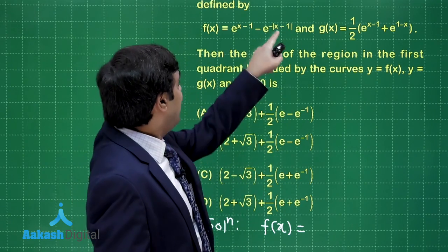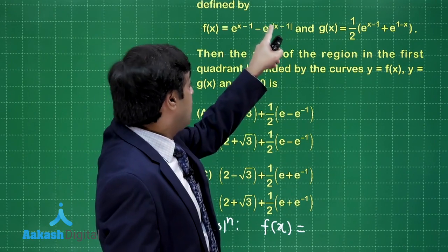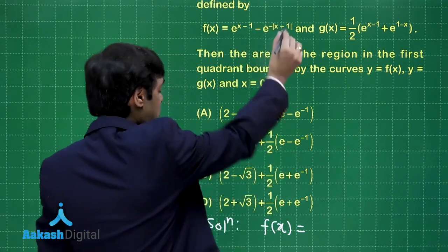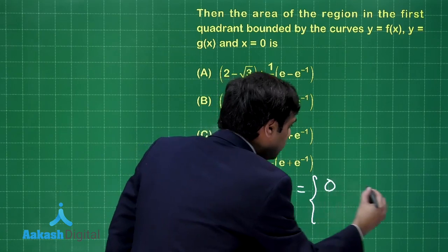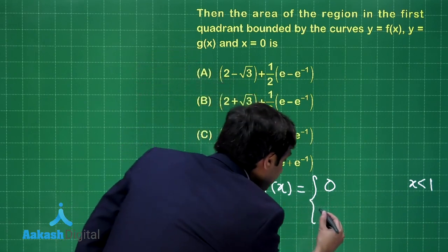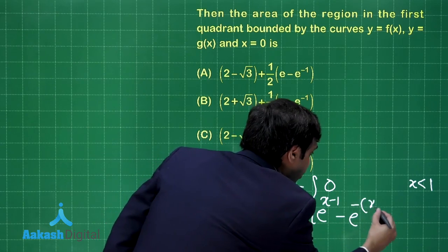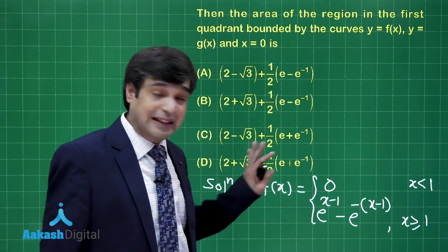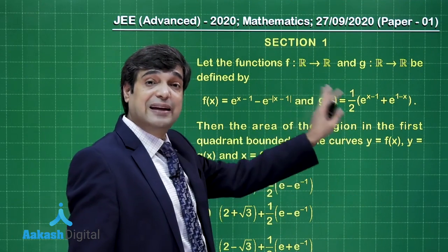Breaking f(x) around x = 1: when x < 1, the term (x − 1) is negative so the minus sign outside cancels, giving f(x) = 0 when x < 1. When x ≥ 1, f(x) = e^(x−1) − e^(−(x−1)). That is the piecewise breakup for f(x).